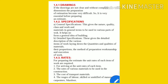Specification — there are two types. First, general specification. This gives the nature, quality, class of work and material in general terms to be used in various parts of the work. It helps to form a general idea of the building.